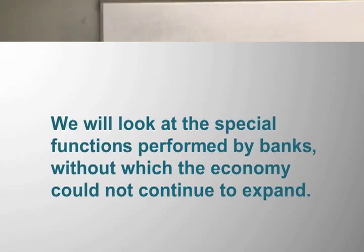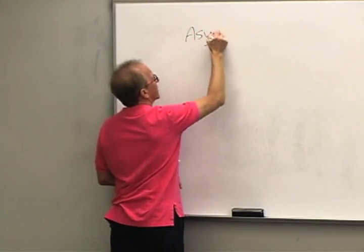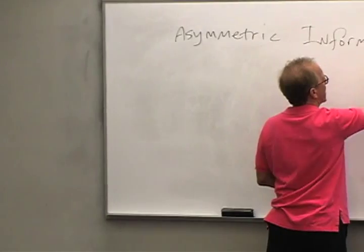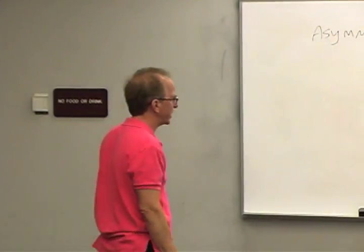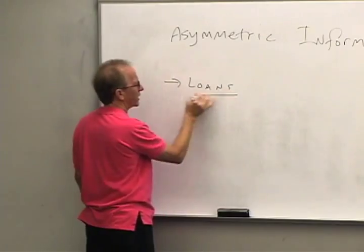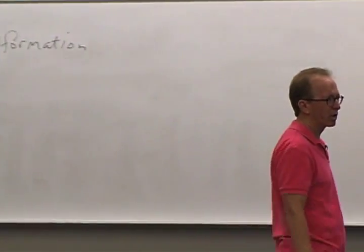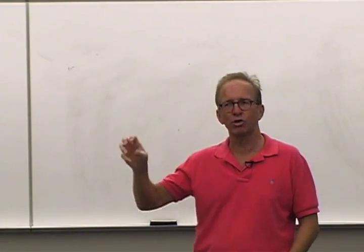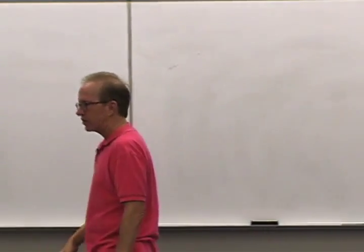Economists have an entire discussion about this subject generally described by the term asymmetric information. What we're really going to get down to is the question of loans. A key role played by banks in our economy is lending money. If you want a car loan, a home loan, or a personal loan, there's a very good chance you go to a bank — or some other institution that performs similar functions.